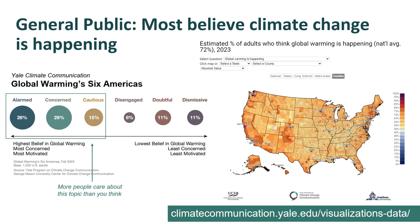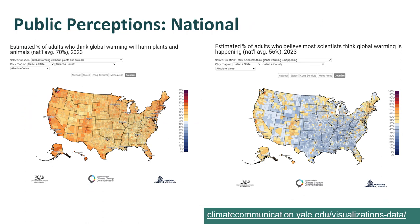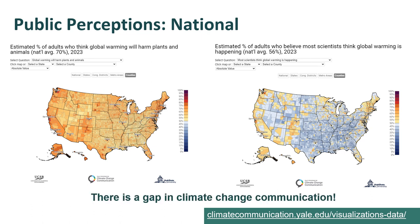You can also visit the link at the bottom right to look into the beliefs of your specific community. Here is the comparison between the percentage of adults who think global warming will harm plants and animals, and the percentage of adults who believe most scientists think global warming is happening. It's interesting that 70% of the U.S. population think climate change will harm plants and animals, and yet only 56% of people believe that most scientists think climate change is happening. The main takeaway is that there is a gap in how we are communicating about climate change with our partners — there might be a lack of transparency in our goals or we're just not resonating with the public.